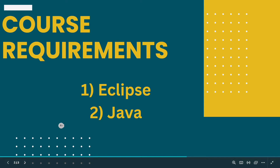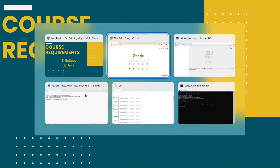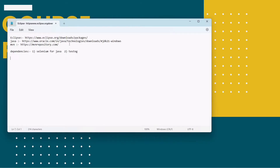The course requirements are two things: the first is Eclipse, which is an IDE. An IDE is required for writing code in an easy and efficient manner, so this time I am also using Eclipse. The second requirement is Java, since Java is the programming language required with Selenium for automation. So I'm picking Java.